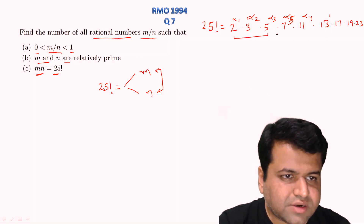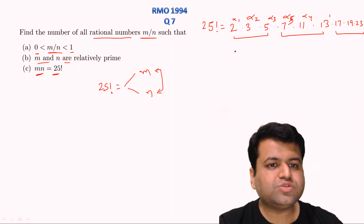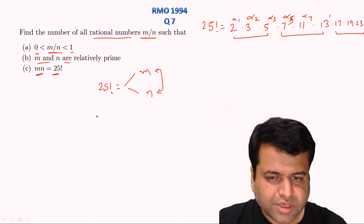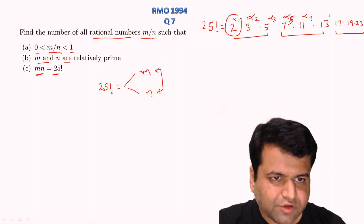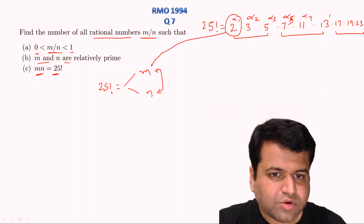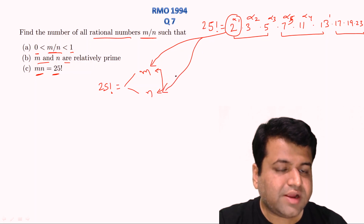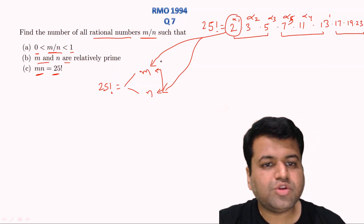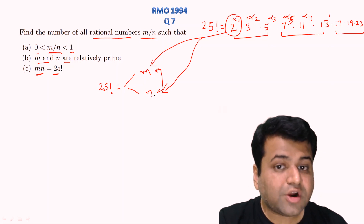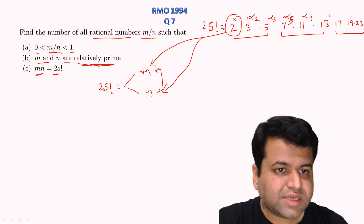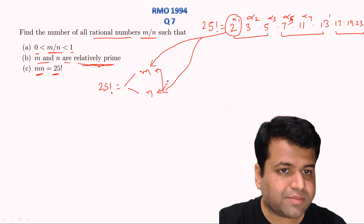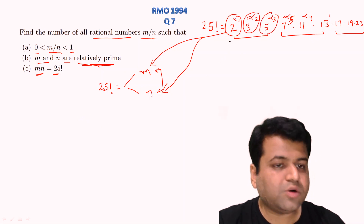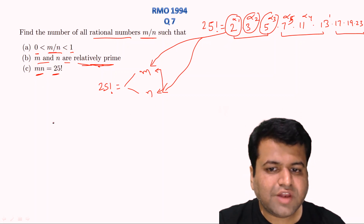So the total prime factors of 25 factorial are 9 prime numbers: 2, 3, 5, 7, 11, 13, 17, 19, and 23. Each prime power — for example, 2 to the power alpha 1 — must go entirely to either the numerator or the denominator; it cannot be split, because we need m and n to be relatively prime. So there will be 9 such packets, and each has 2 options, giving us 2 to the power 9 possibilities.